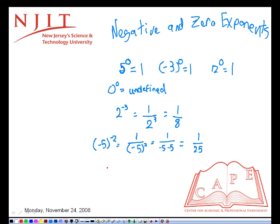As with positive exponents, we must be careful to see whether the base is negative or whether the negative sign is outside of the exponent. So negative five to the negative two with no parentheses is negative the reciprocal of five to the power of two.